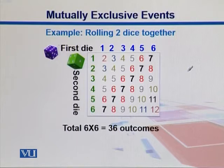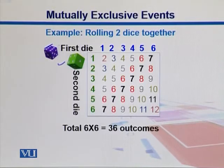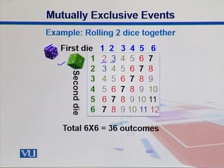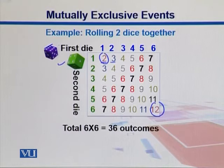From die 1, represented in blue, and die 2, represented in green: if we roll them together and get 1 on both, we get a sum of 2. If we get 2 from the first die and 1 from the second, we get 3, and so on. In total we get 36 possible outcomes. The biggest sum is 12, where we get 6 on both dice, and the smallest is 2, where we get 1 on both. We can get more 7s here in the middle.